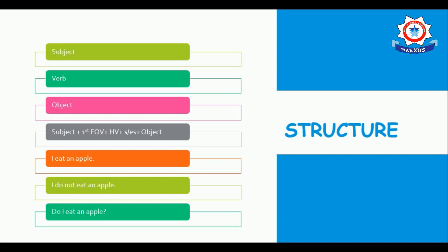Here, after helping verb — that is HV — you can see a plus sign. I placed it mistakenly, just avoid it. The correct structure is: subject plus first form of verb plus HV/S/ES plus object. You can place S/ES in brackets as per your book also.